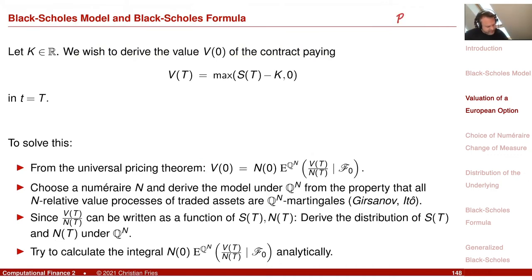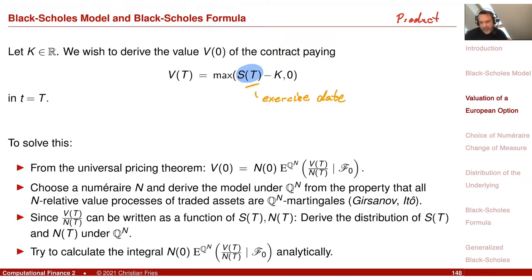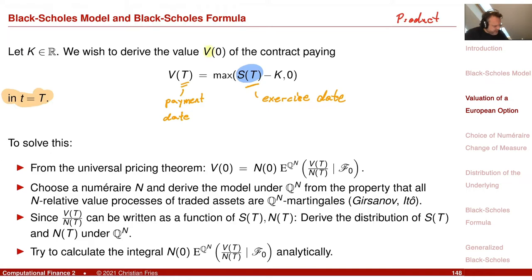The product we would like to value is the option on this stock: the value of S observed at capital T, where T is the exercise date of the option and also the payment date. That amount is paid at capital T. What are the steps to calculate the value? We would like to calculate the value of this financial product at time zero — let's assume little t equals zero is now.